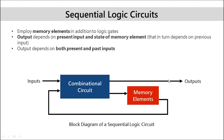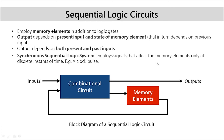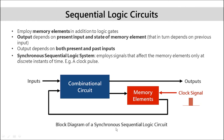The current output depends on the output of the gates as well as on the state of the memory elements, and the output of the gates depends on the state of the memory element. A particular type of sequential logic circuit that employs signals affecting the memory elements only at discrete instances of time is called a synchronous sequential logic system. They have an additional clock signal fed into the memory element, and the clock signal determines exactly at which instant the change in state should take place — only when the clock signal changes its value.